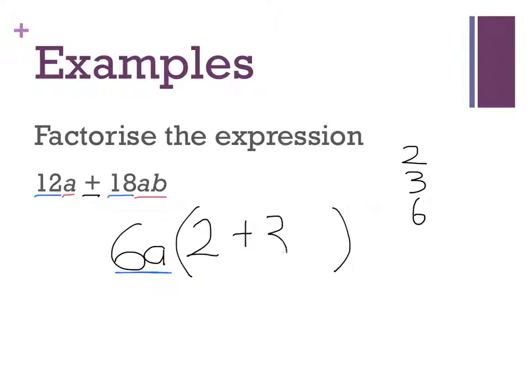Well, 6 threes are 18. 6 times 3 is 18. Then how do I get from a to ab? Okay, a times what is ab? Oh, a times b. Okay, so that's my answer that I got. 6a brackets 2 plus 3b.